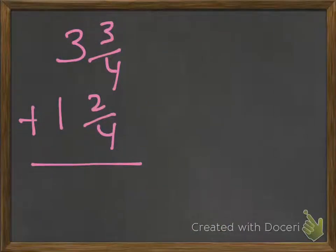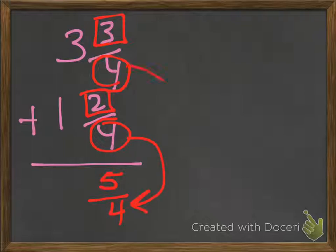So another way of looking at it is we can actually add mixed numbers, especially if they have the same denominator. So we know all we have to do is add the numerators together: 3 plus 2 is 5, and the denominator stays the same. So if you have like denominators it stays the same.